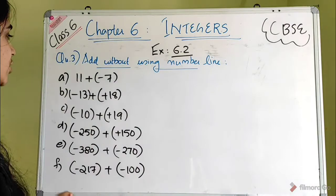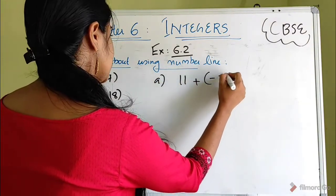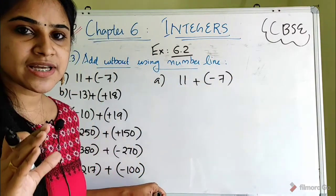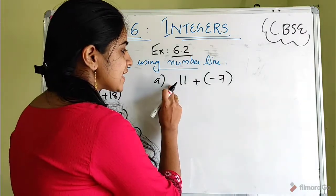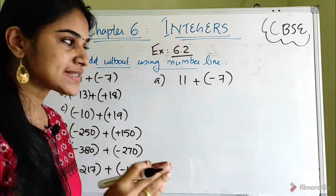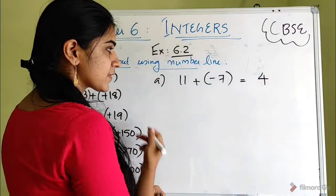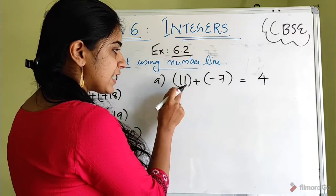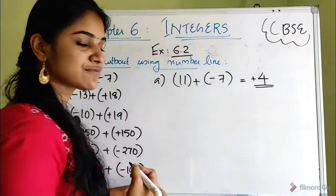So the first question: 11 plus minus 7. First, we need to check the sign. 11 has a positive sign, and the other is negative. When we have different signs, we take the difference: 11 minus 7 is 4. The sign of the bigger number, 11, is positive, so the answer is plus 4.